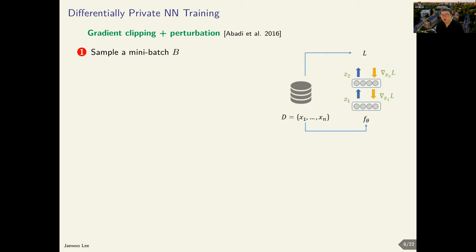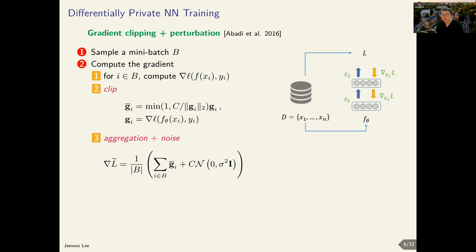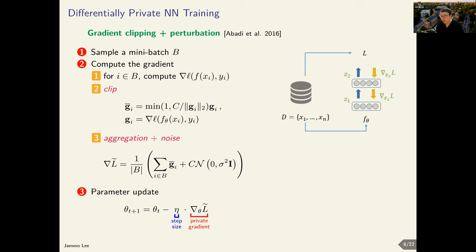Now we turn our attention to differentially private neural network training. As before, we start by sampling a mini-batch from the input dataset, and for each example in our mini-batch, we compute the per-example gradient. Once the per-example gradients are calculated, we inspect the norm of each gradient. If the norm is greater than the predefined clipping threshold C, we clip the magnitude of the gradient; if the norm is smaller than C, we use it as is. After clipping, we take the sum of the clipped gradients and add Gaussian noise to satisfy differential privacy. We call this aggregated noisy gradient a private gradient, and once we have it, we update the parameters of our neural network.